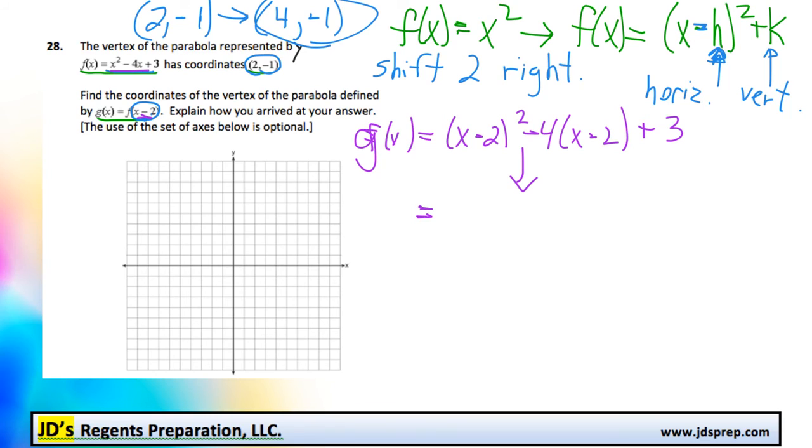oh, by the way, I guess this is g of x, not f of x. So, if you combine all the like terms, you would end up getting x squared minus 8x plus 15.